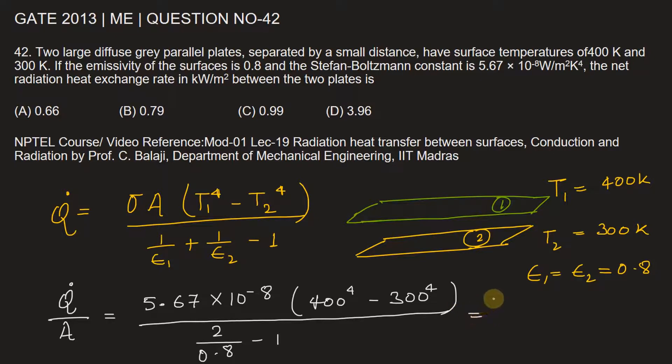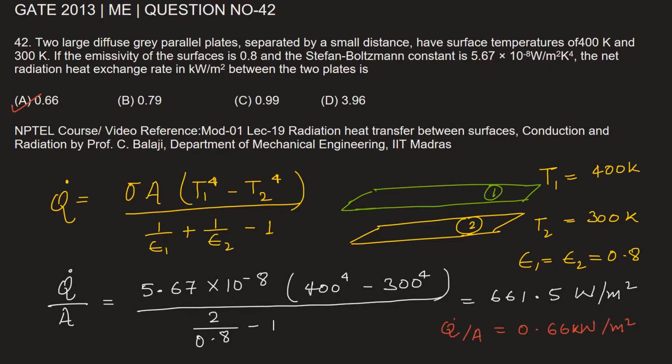Using a calculator, we get this value to be 661.5 watt per meter square. Therefore, the radiation heat exchange rate per unit area q dot by A equals 0.66 kilowatt per meter square. Therefore, option A is the correct choice.